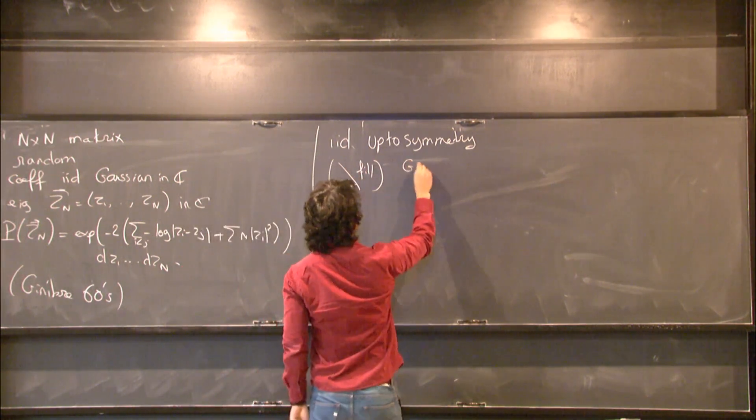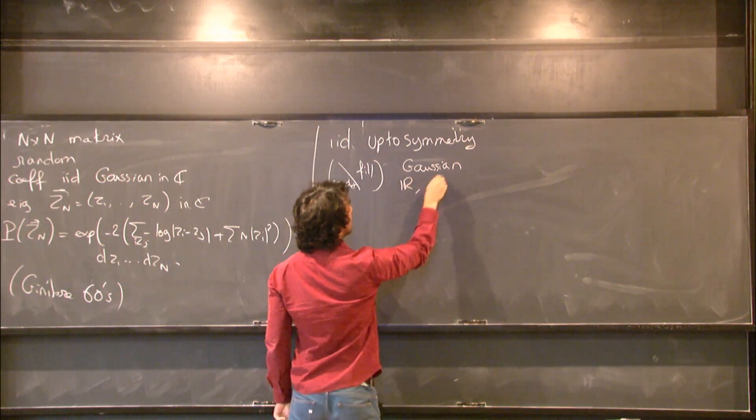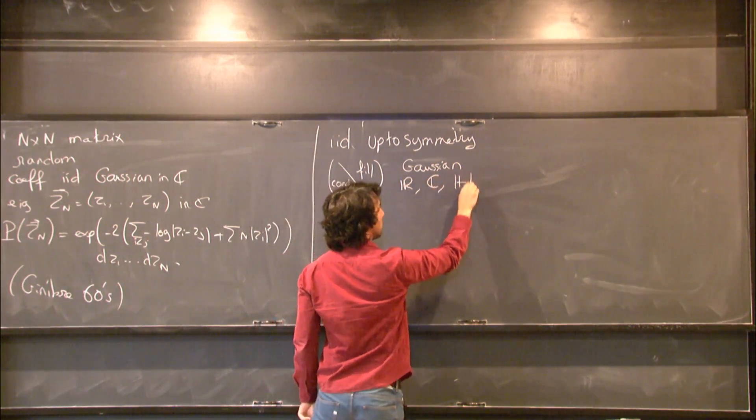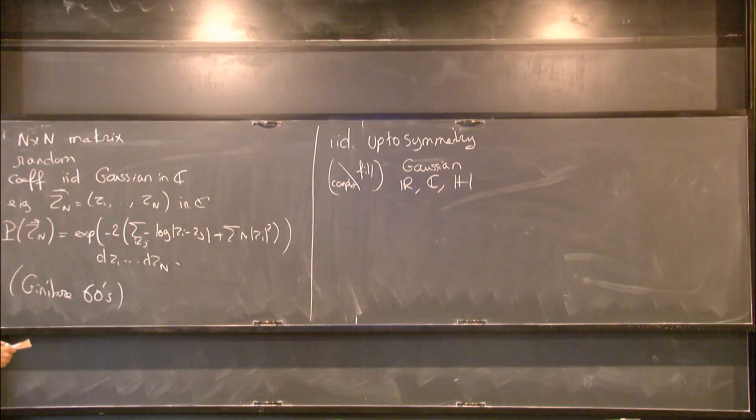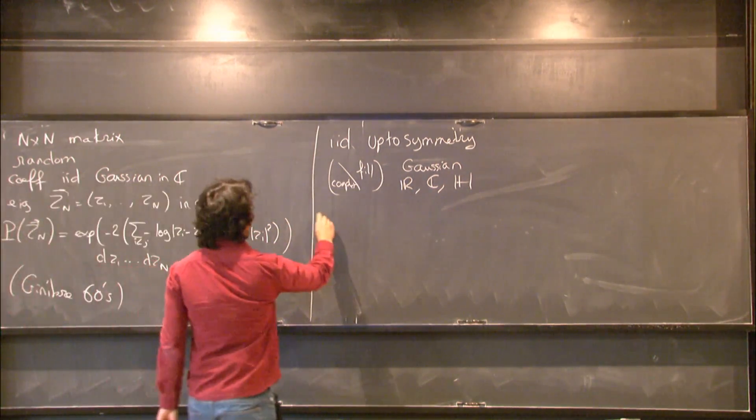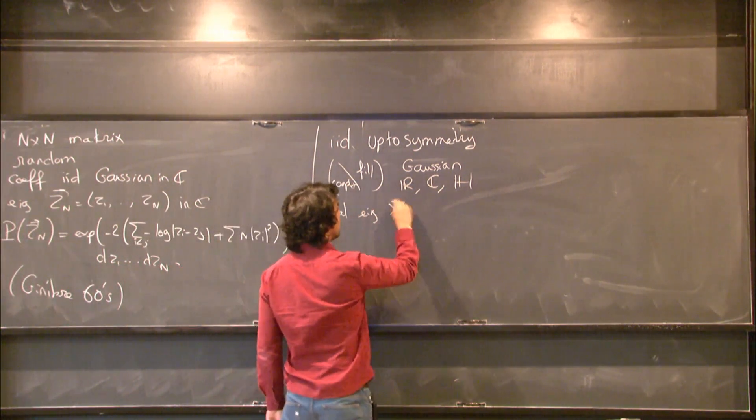And once again, I take Gaussian coefficients. And here I can take them real or complex or even if you're into that, you can take them quaternionic. There is such thing as quaternionic Gaussians. So you have real eigenvalues, eigenvalues, x_n.